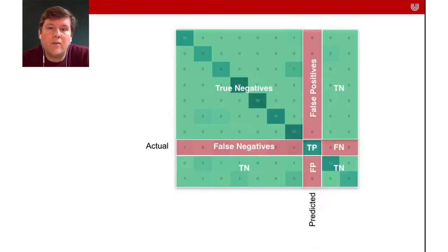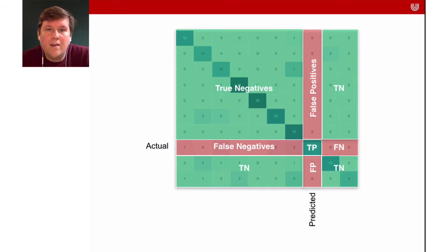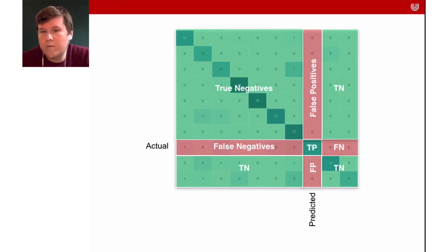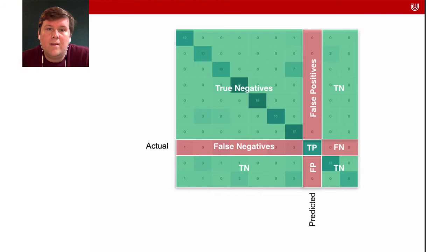Here again is a confusion matrix based on this terminology. We have true negatives, true positives, false positives, and false negatives. Especially if you have multi-class classification problems, looking at this so-called confusion matrix is very important and useful — I highly recommend it because you can understand what is mistaken for what.